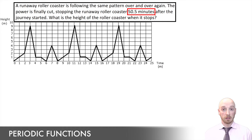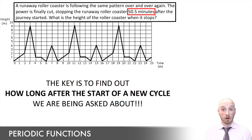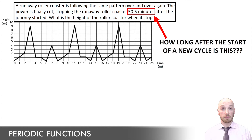Each cycle in a periodic function is identical to all the others. So all we have to do is figure out how far into a new cycle our function is stopping, and then use the first cycle — which is always drawn for us — to locate the answer. In the end, we don't care about how many full cycles pass. All we care about is how far into a new cycle we have to stop the function, basing our answer on the first cycle as if we were starting the whole thing over again.